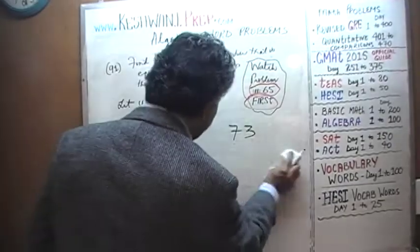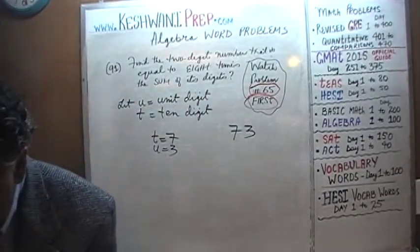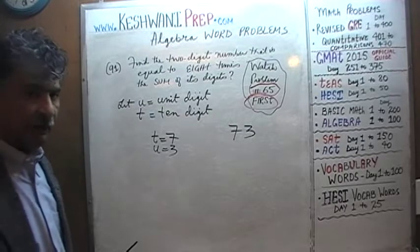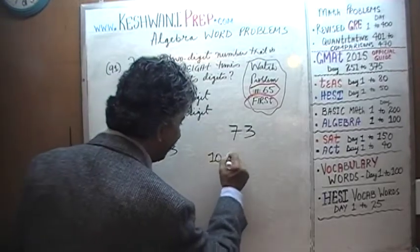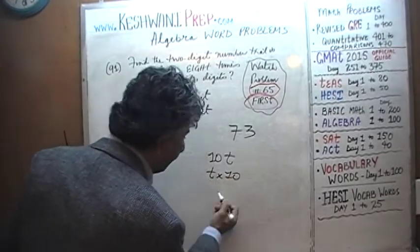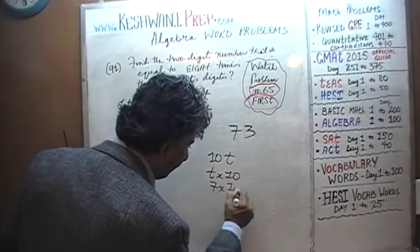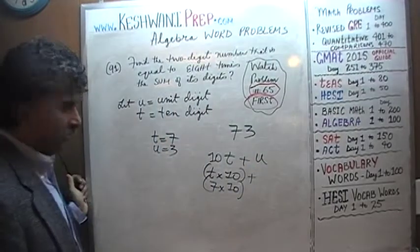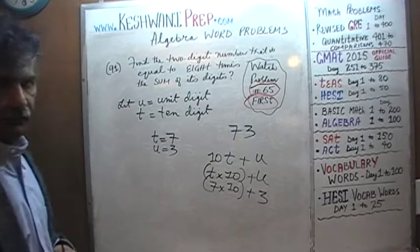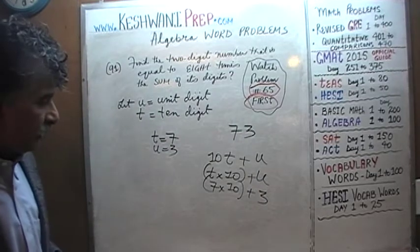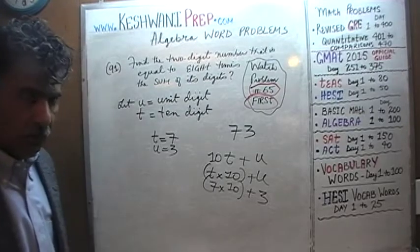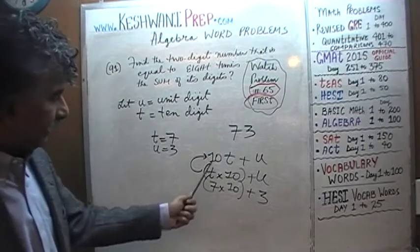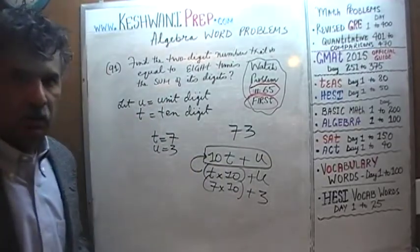We ask ourselves: how many tens do we have? We have 7 tens, so it is 10 times T. It is T times 10, because it tells you how many tens we have. We have 7 tens plus however many unit digits we have. So a two-digit number in the language of algebra is represented as T times 10 plus U, or written more neatly: 10T plus U. This is how we represent the notion of a two-digit number.